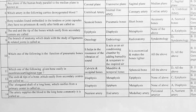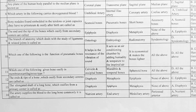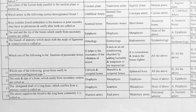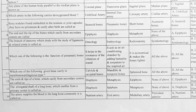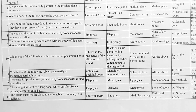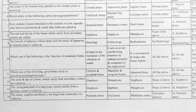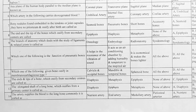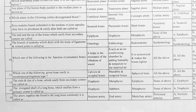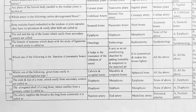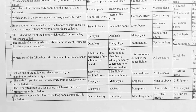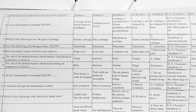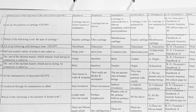Next, the artery that supplies blood to the long bone — commonly it is called — options: A. nutrient artery, B. end artery, C. medullary artery, D. periosteal artery. Correct answer is A, nutrient artery.